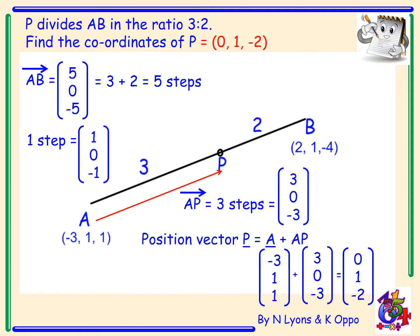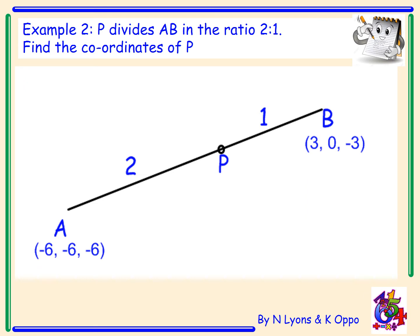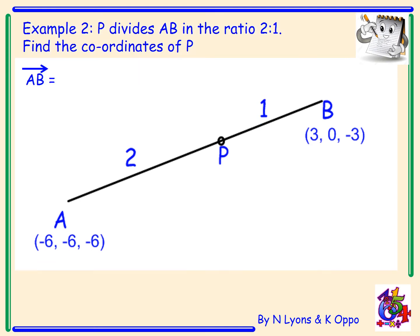Now for every question, I do it exactly the same way, following the same steps. So let's try a second example. Example 2 says point P now divides the line AB in the ratio 2 to 1. Find the coordinates of point P. On the diagram, I've got point A with coordinates (-6, -6, -6) and point B with coordinates (3, 0, -3). Step 1, what did I do? I'm going to work out the vector AB. So AB equals (9, 6, 3). So AB has a vector with components (9, 6, 3).